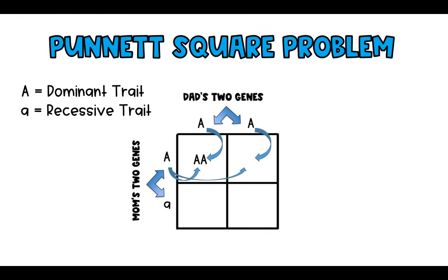They can only combine in four different ways. Using the arrows, I'm moving the two genes into the first square — that's what the child would have in that combination. Be careful: bring the uppercase A directly over from mom's genes, and also bring the uppercase A down from dad's genes. We're looking directly to the left and directly above each square and filling it in as we go.